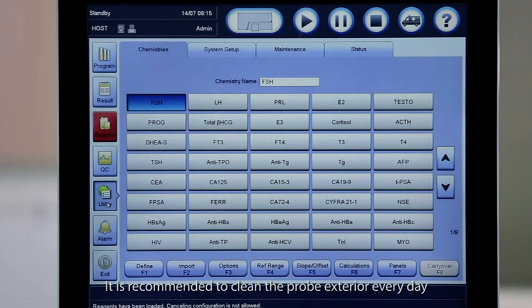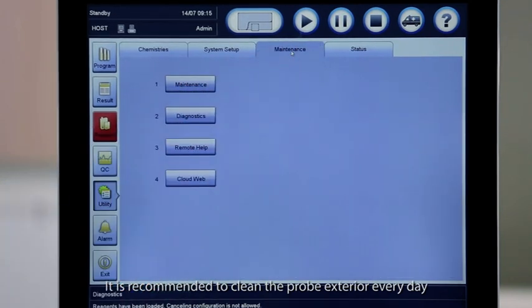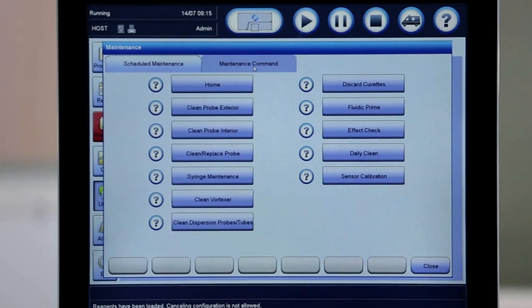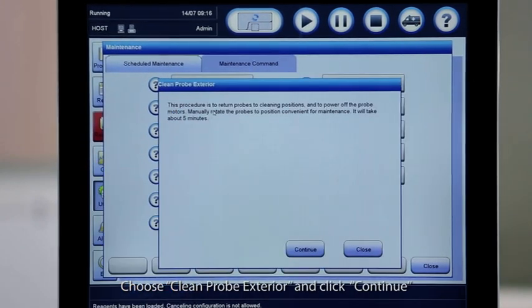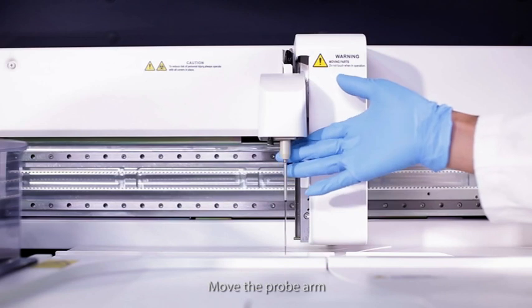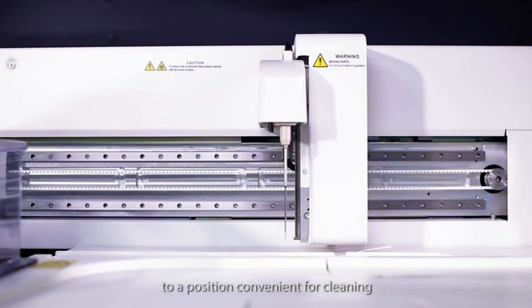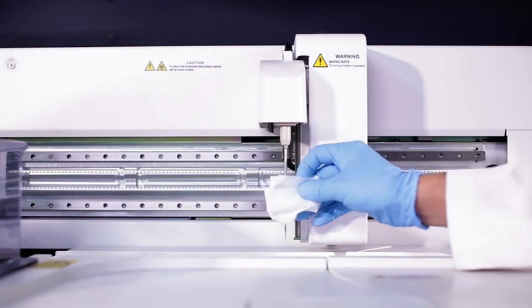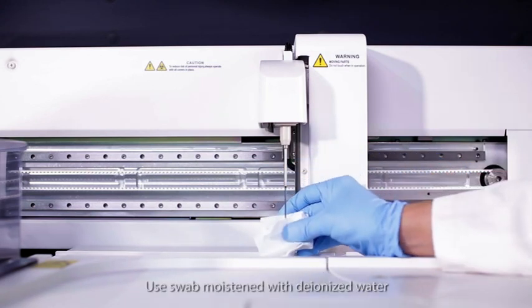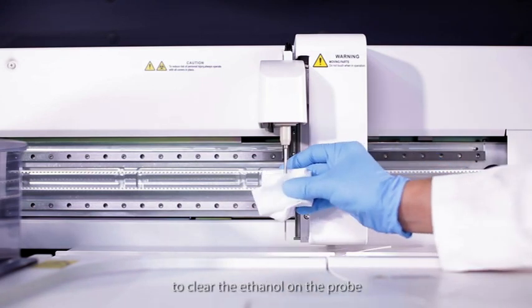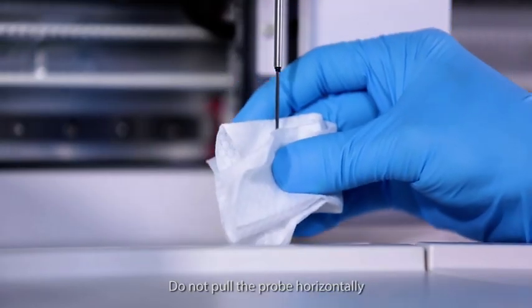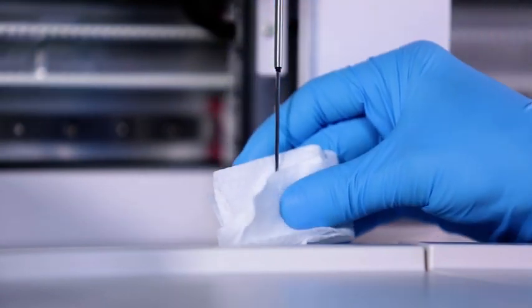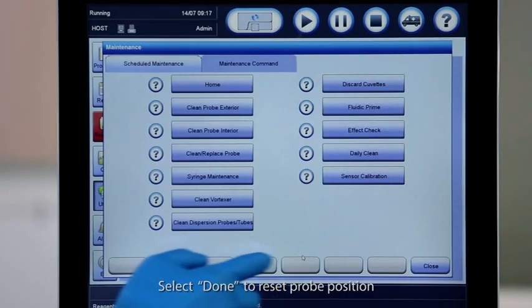It is recommended to clean the probe exterior every day. Go to Maintenance and click Maintenance command. Choose Clean probe exterior and click Continue. Move the probe arm to a position convenient for cleaning. Use alcohol swab to gently wipe the probe. Use swab moistened with deionized water to clear the ethanol on the probe. Do not pull the probe horizontally to prevent probe damage. Select Done to reset probe position.